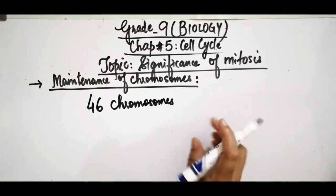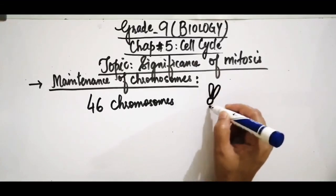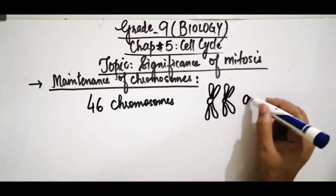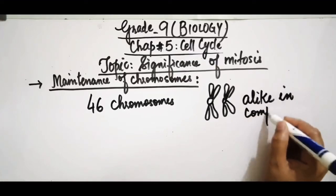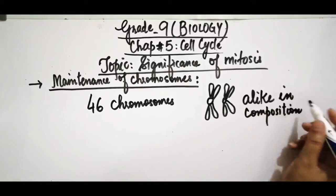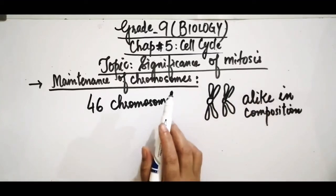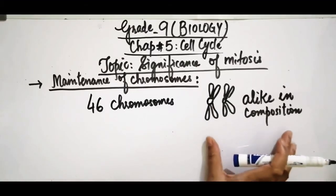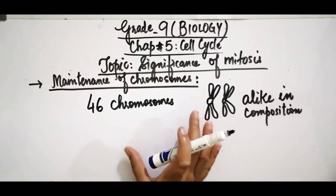For example, the human body has 46 chromosomes, and all these chromosomes are somewhat different from each other in that they have different compositions. Two chromosomes that are alike in composition are the same — they have no difference among them. Mitosis not only maintains the number of chromosomes in daughter cells but also ensures they are alike in composition, transferred from parent cell to offspring.